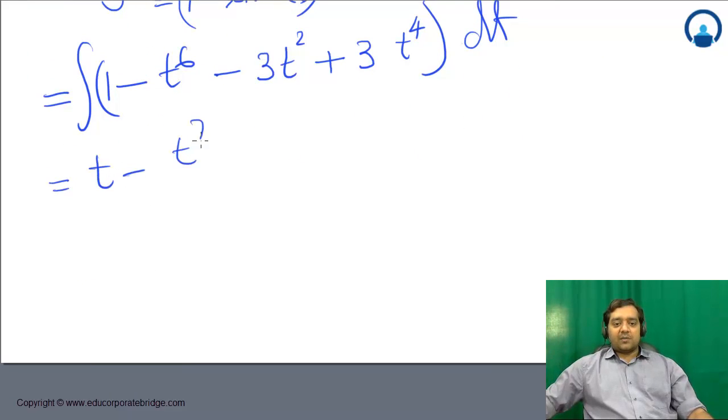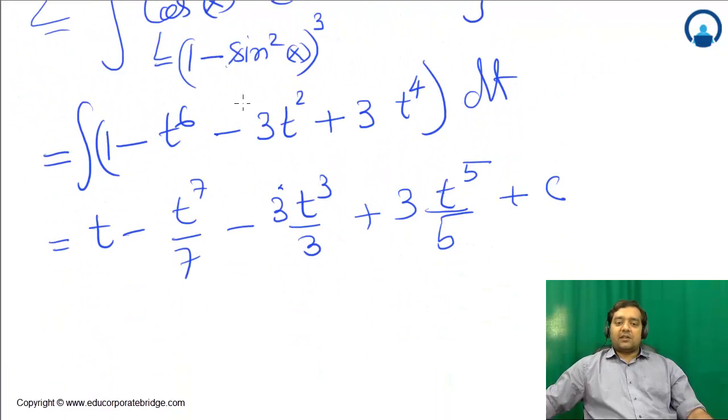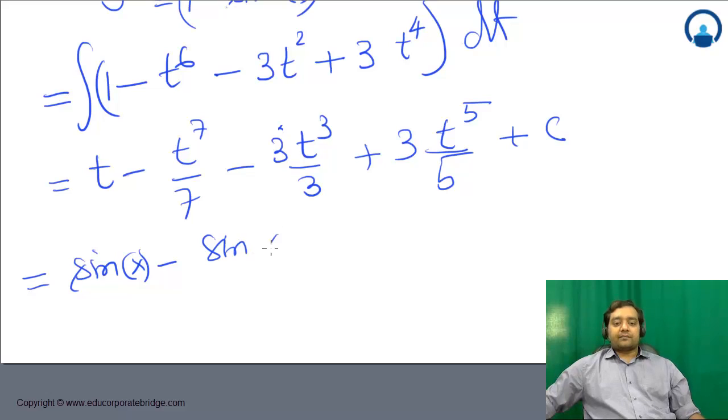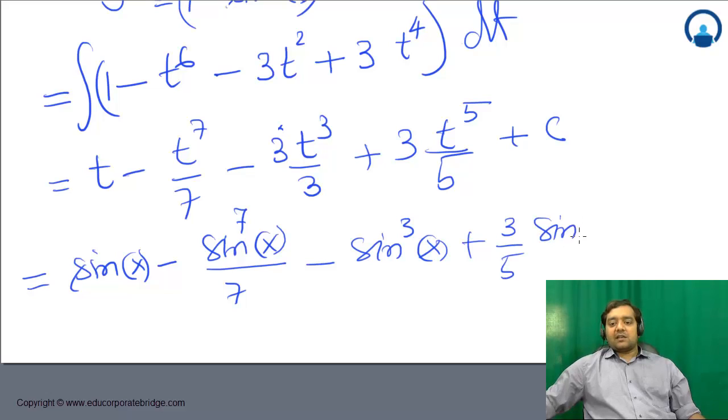Integrating: t - t⁷/7 - 3t³/3 + 3t⁵/5 + C, where t = sin(x). So this equals sin(x) - sin⁷(x)/7 - sin³(x) + (3/5)sin⁵(x) + C.